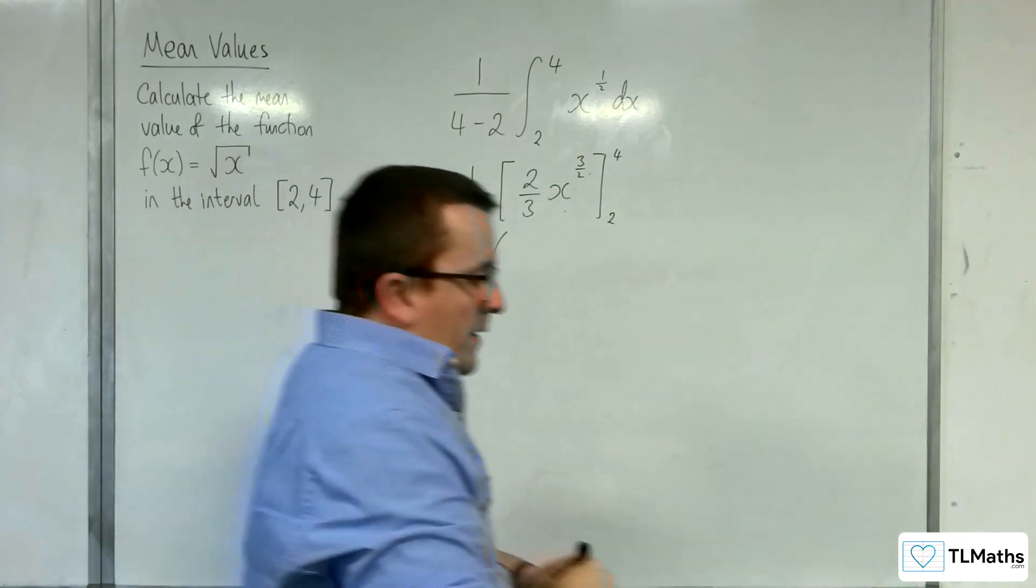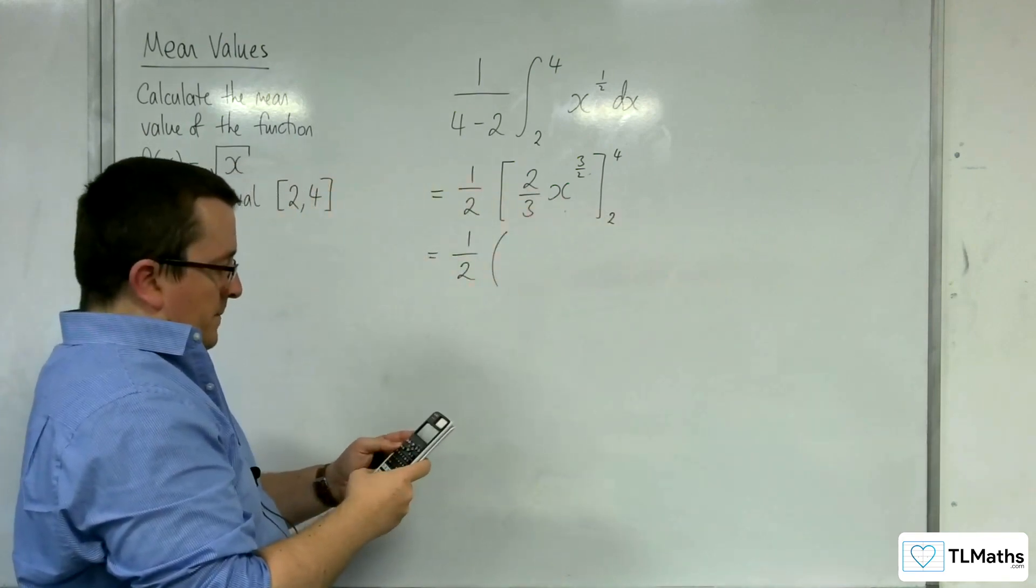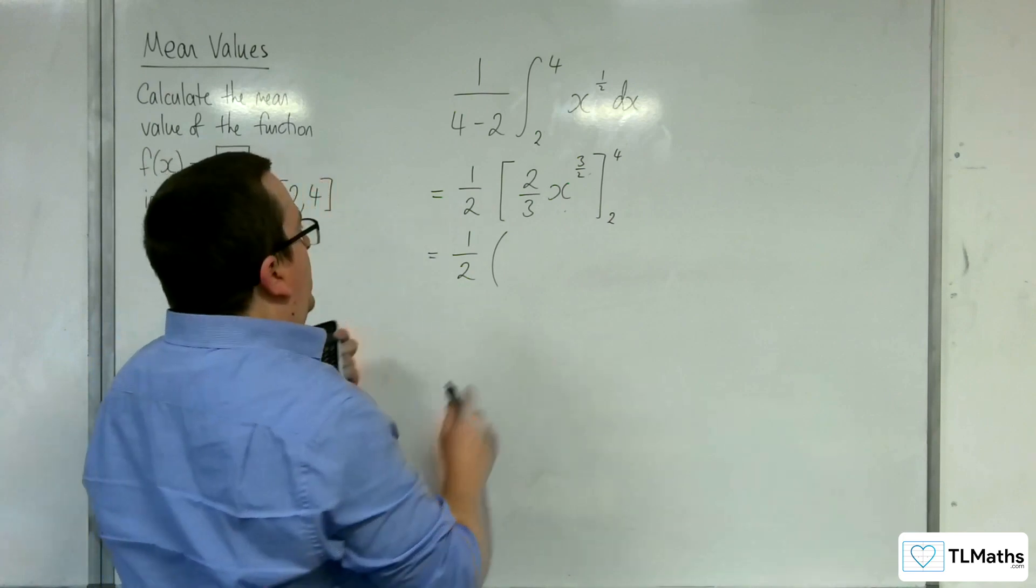So then I'm going to substitute in the 4. So 2 thirds times by 4 to the power of 3 halves is 16 thirds.